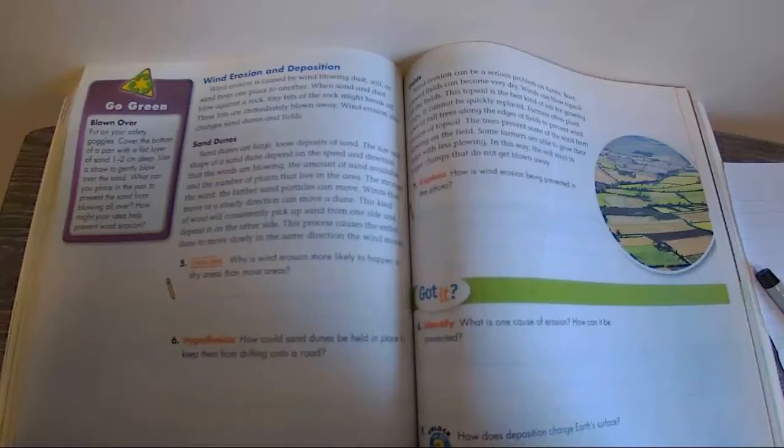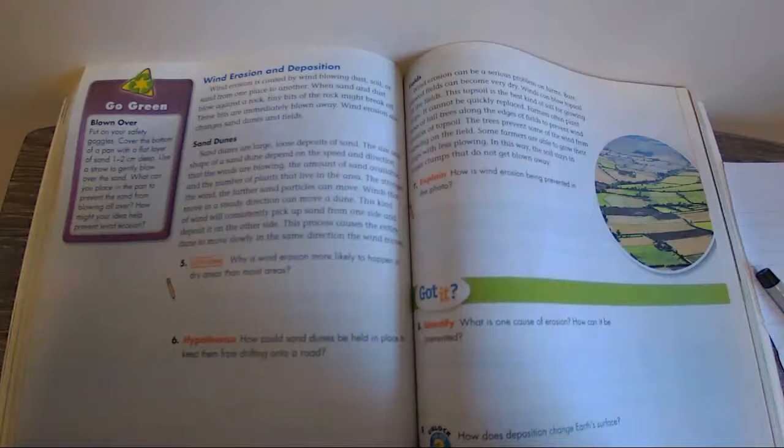Wind erosion and deposition. Wind erosion is caused by wind blowing dust, soil, or sand from one place to another. When sand and dust blow against a rock, tiny bits of a rock might break off. These bits are immediately blown away. Wind erosion also changes sand dunes and fields.